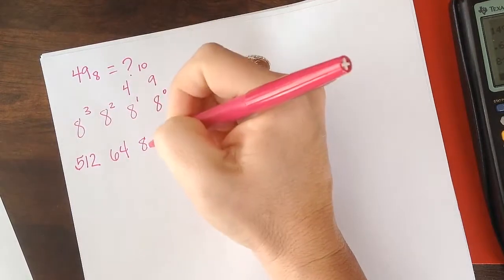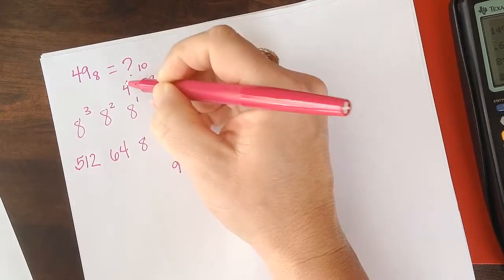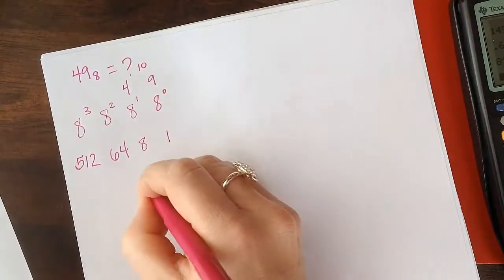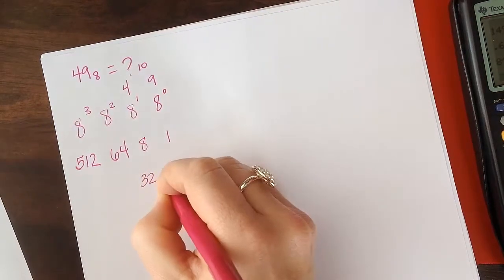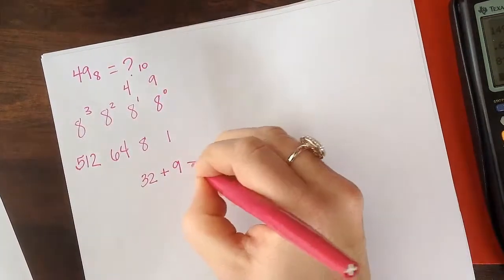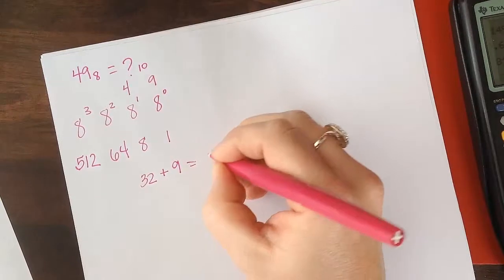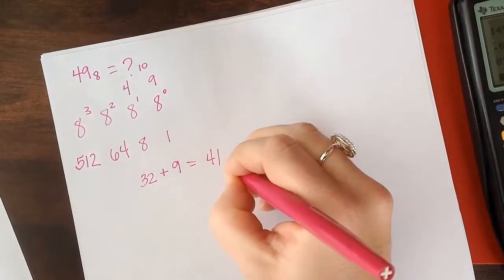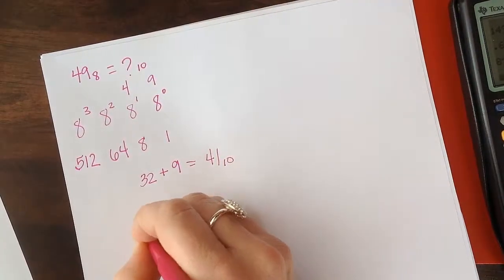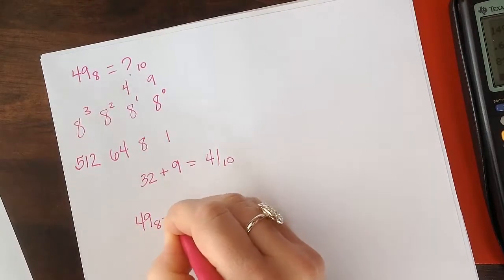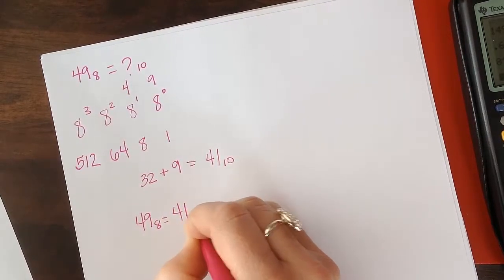And we have 4 times 8, that's 32. So we have 32 plus 9. So 32 plus 9 is going to equal 41 base 10. So that means that 49 base 8 is equal to 41 base 10.